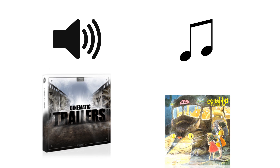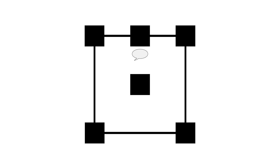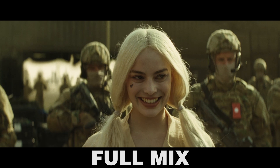Sound effects and music can be added later, but dialogue is unique. The key is to find a 5.1 audio source, because usually in the 5.1 mix the center channel contains mostly dialogue, and sound effects and music are either not present or significantly lower in volume.